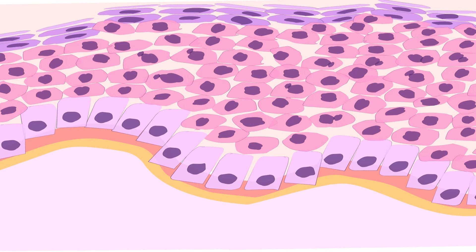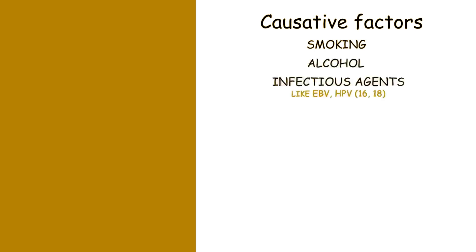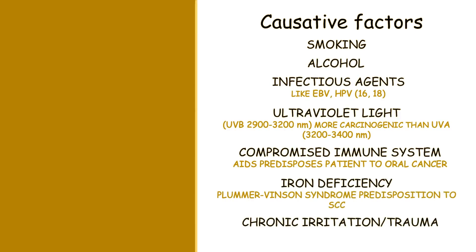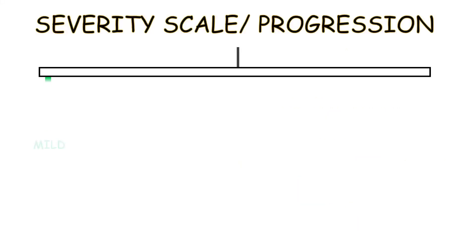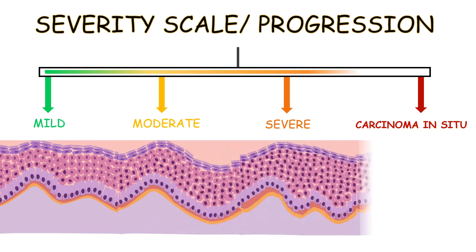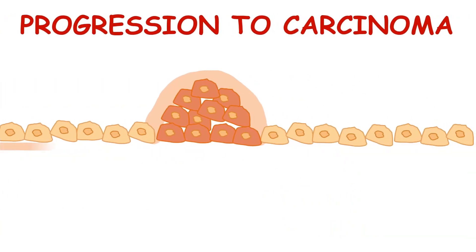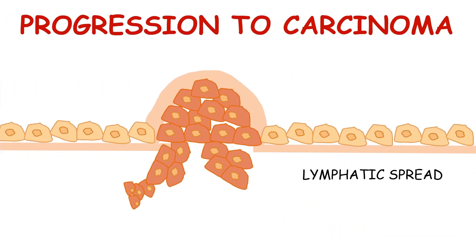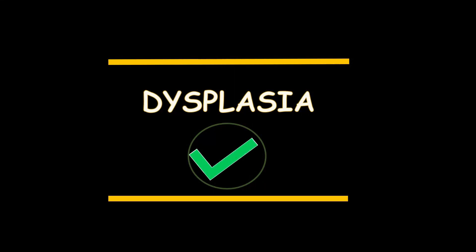Listed here are a few noxious stimuli that may cause disruption in the normal cell cycle or result in dysplastic changes that may keep progressing if not removed timely. If the previously mentioned causative factors persist, dysplasia may progress from its mild form to the severe versions as shown. Ultimately, a breach in the basement membrane causes the cells to metastasize through lymphatic channels to distant sites.